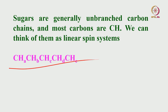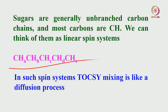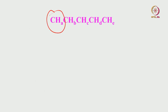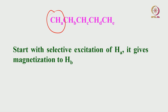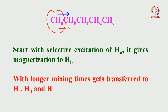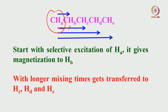In the case of a linear system, you can do selective excitation. Spin TOCSY is like a diffusion process. I start by selectively irradiating proton A. It gives magnetization to B, depending upon the strength of the coupling and the duration of the mixing time. If I keep increasing the mixing time, it slowly gives magnetization to C, then D, then E. It is a sequential process — propagation of magnetization in TOCSY goes among all the coupled spins. It is not unidirectional; magnetization transfer goes forward and backward. A gives to B, and B also gives back to A.